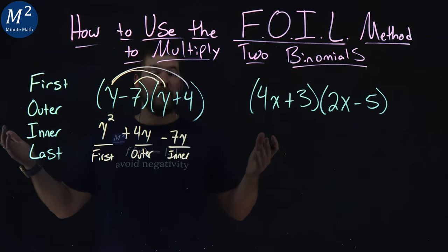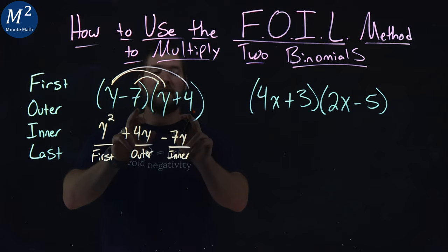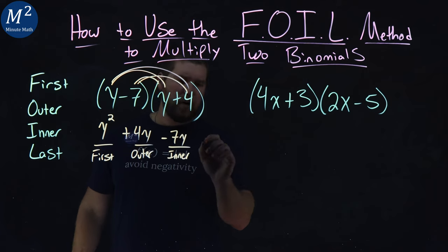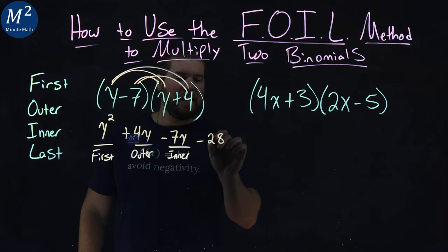And lastly, we have the last ones. The last of each binomial, seven times four, or negative seven times four. We have minus 28 here. That's the last.